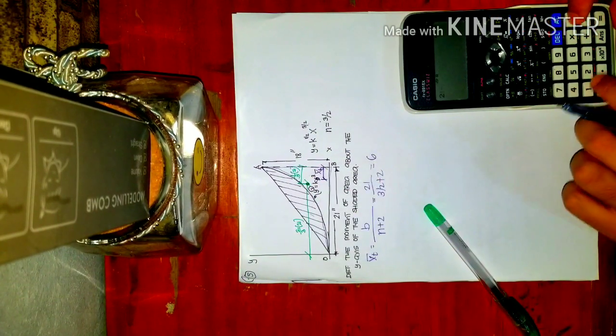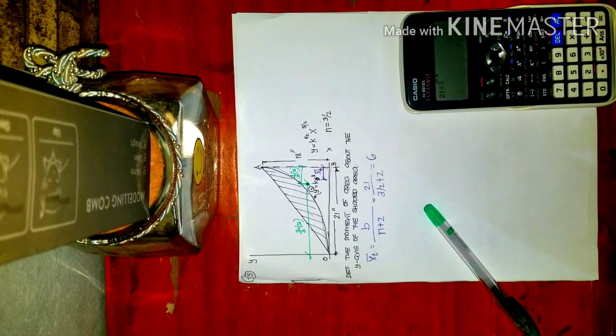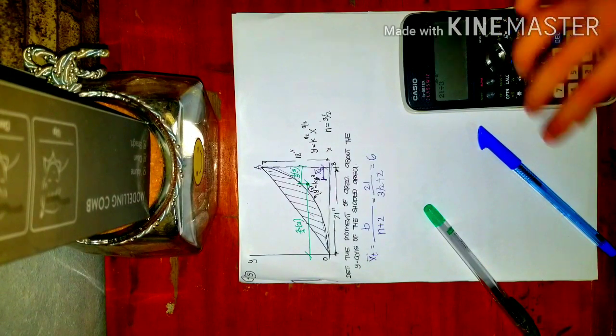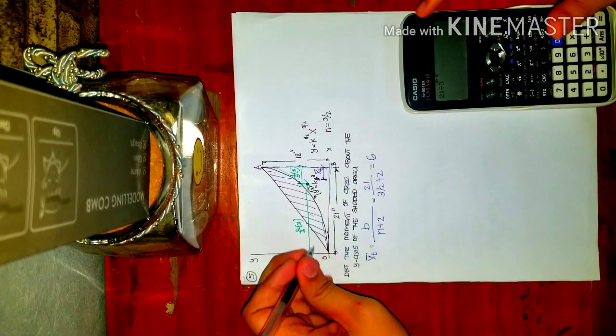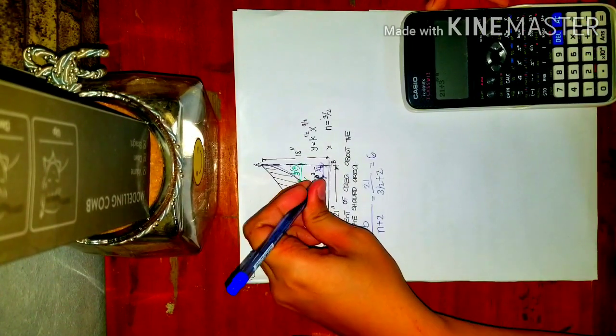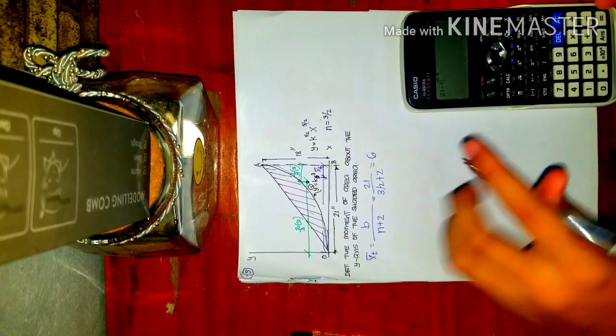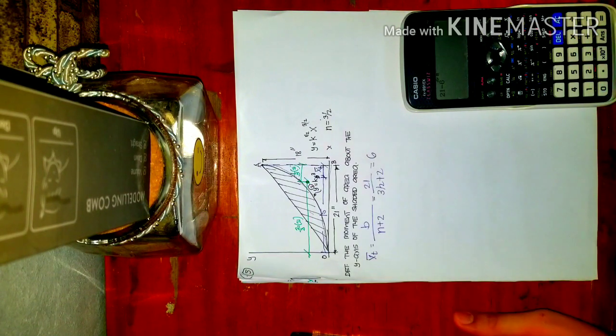So the distance is 6. So it's located here. If this is 6, therefore, this distance will be 21 minus 6, so that will be 15.